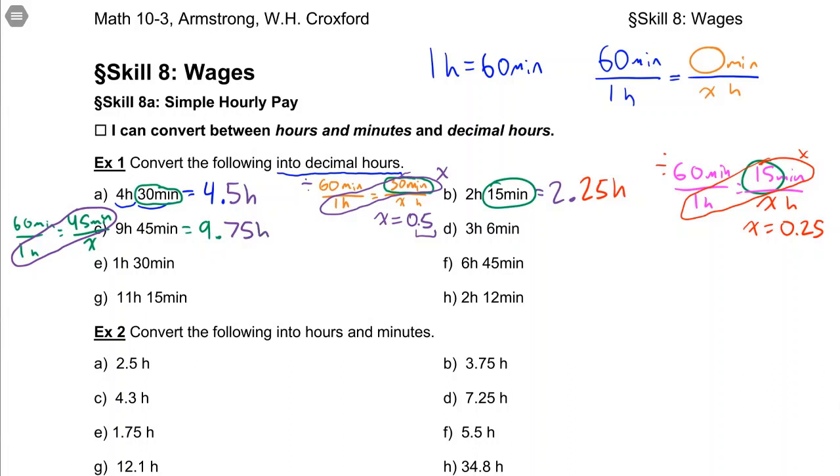Now this 6 minutes is an example of one that you might not have memorized. Most people don't know your 6 minutes, your 12 minutes we've got down here, just off the top of their heads. So for each of those, you're almost definitely going to need to set up this proportion. 60 minutes per 1 hour is 6 minutes per an unknown. And when you cross multiply and divide that, you get 0.1. So this is going to be 3.1 hours. Okay, so pause the video here, then try the next 4 on your own. And I'll put the answers up in just a sec.